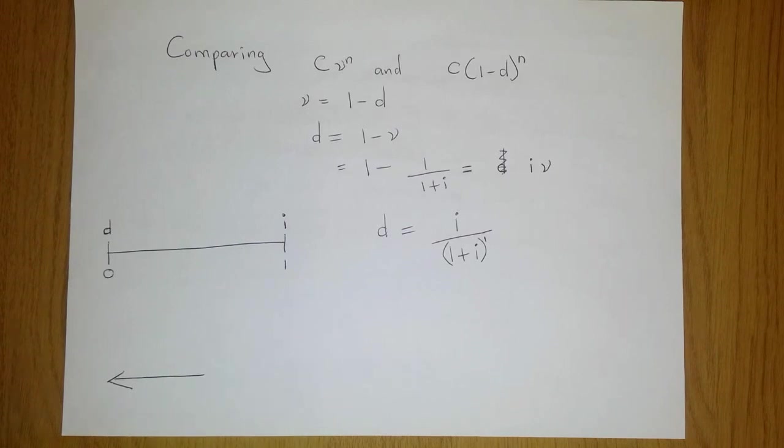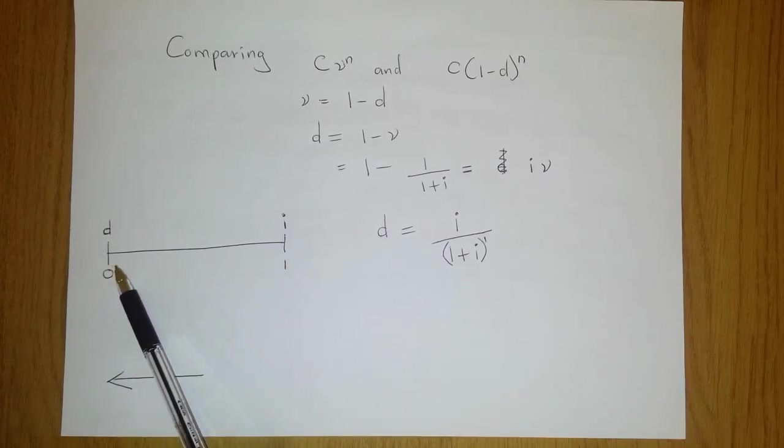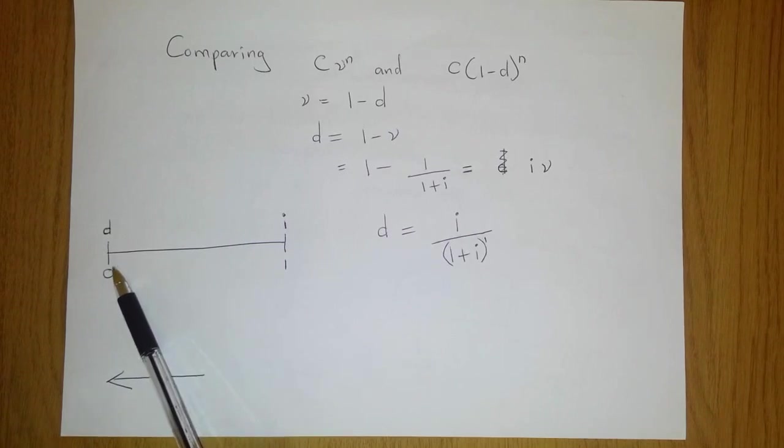So we need to recall that d is the interest paid at time 0 on a loan of 1 while i is the interest paid at time 1 on the same loan. Now if the rates are equivalent then if we discount i from time 1 to time 0 we will obtain d.